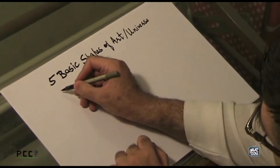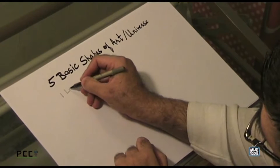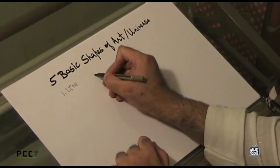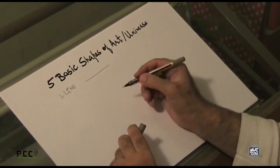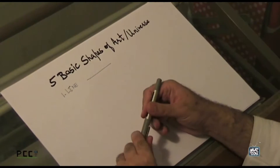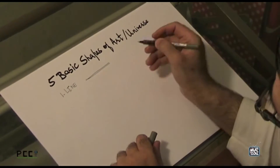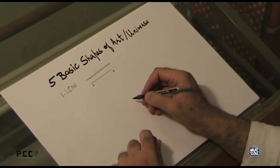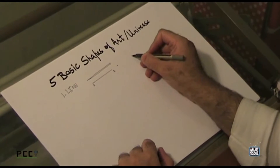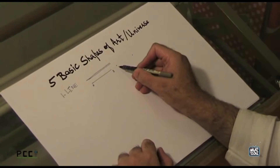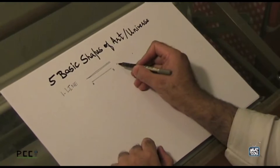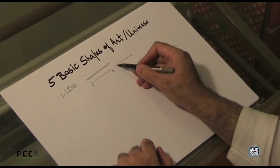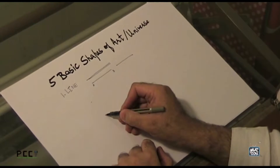So let's start with number one: Line. A line is the distance between point A and point B. Mathematically speaking, a line is basically the distance between point A and point B. To draw lines, you can take two points and then create a line — you join these two points with a line.